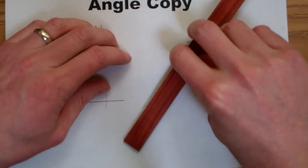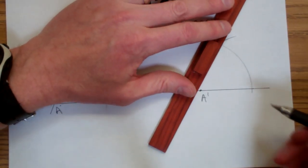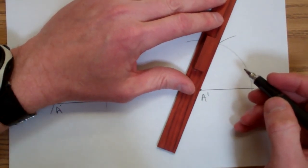To finish the copy, I'll take my straight edge, and I'll connect the vertex to this new intersection.